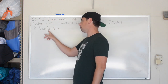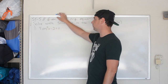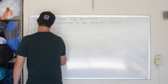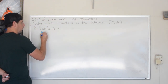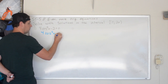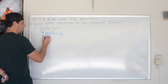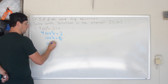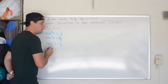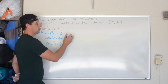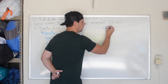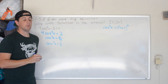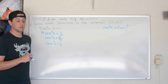This is problem number 1: 4 cosine squared of x minus 2 equals 0. If I want to solve something like this, my goal is to isolate cosine of x. I'm going to add the 2 over and I get 4 cosine squared x equals positive 2. I divide by 4 and get cosine squared x equals 2 over 4, which reduces to 1 half. Remember, cosine squared of x is the same thing as cosine of x, squared.